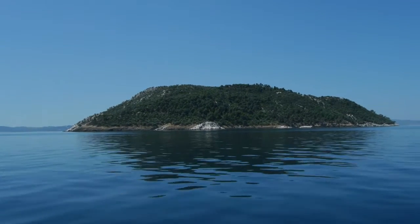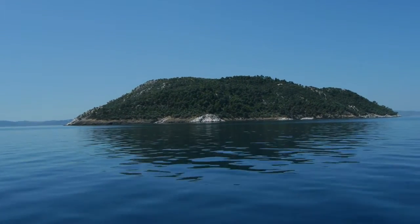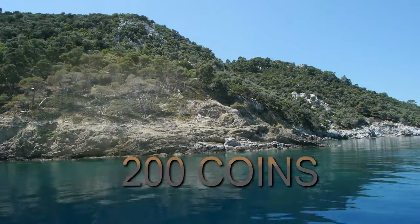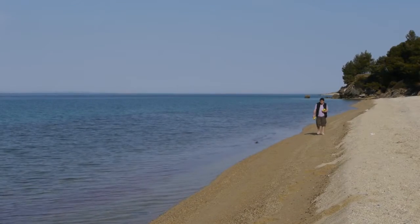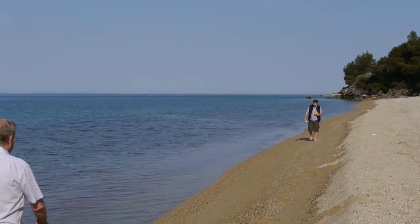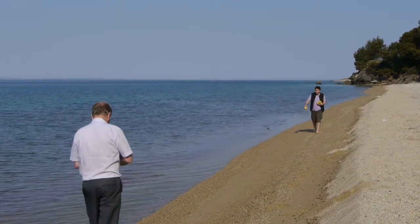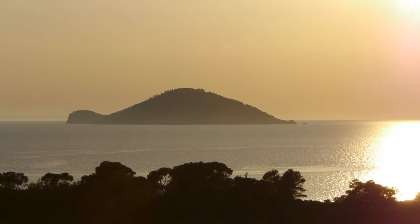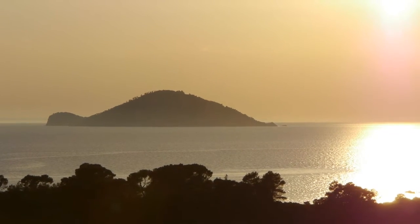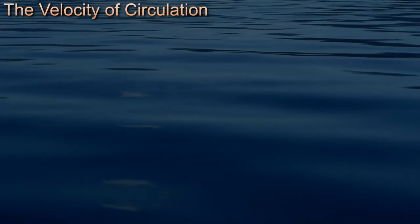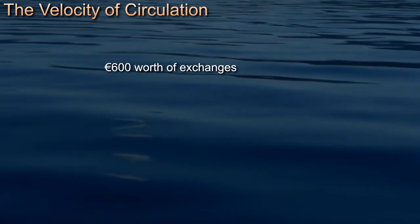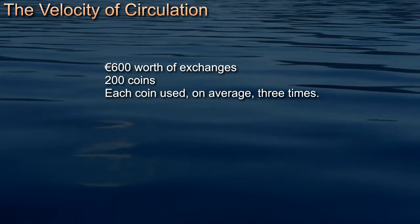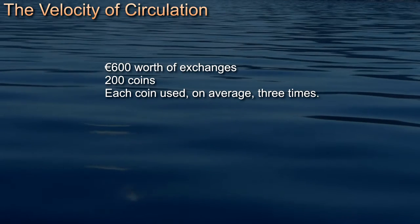For our tiny island we have just 600 euros of output that we exchange, but we only have two hundred one-euro coins. Can that be enough to make it possible to exchange all our output? The answer is yes, certainly, because the coins get used more than once in the course of the year — they get passed on from one person to another in the process of exchange. And from this simple idea we can develop an important formula.